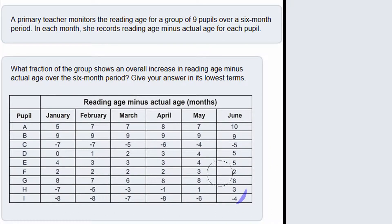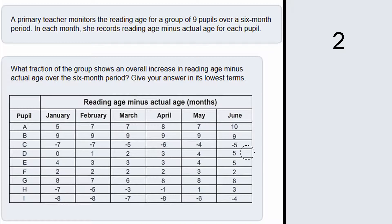Looking at pupil A: in January they had a reading age minus actual age of 5, and it's gone up to 10, so we add that to the tally — that's one pupil. B has gone from 9 to 9, so that's not an improvement. C has gone from minus 7 to minus 5, so that's an improvement. D has gone from 0 to 5, so that's also an improvement.